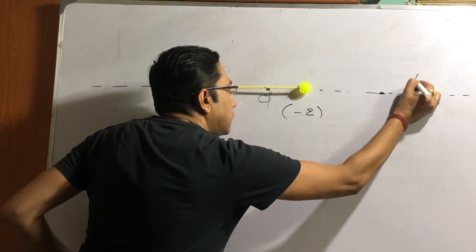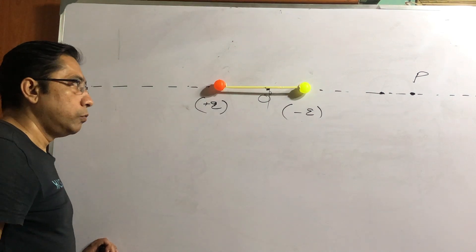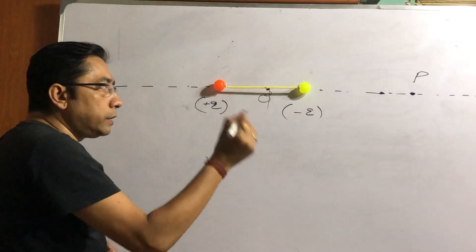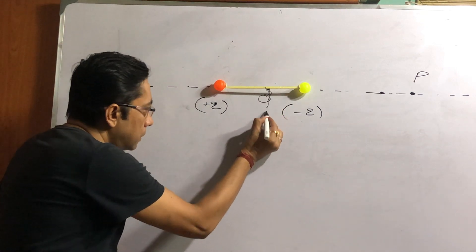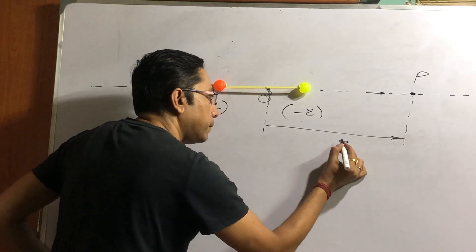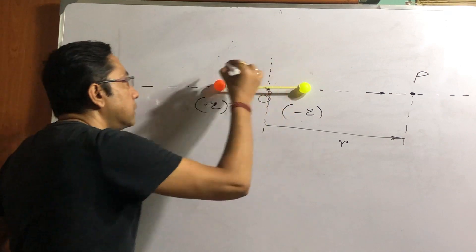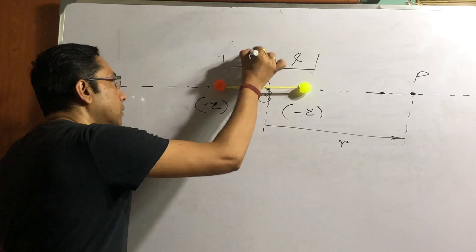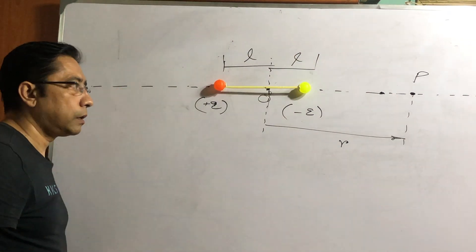Let us consider a point P here. At point P we are going to find electric field due to the dipole two charges. Now let us go for the orientations. Orientation means point P lies at a distance R from center, and the dipole itself has a length 2L. 2L means from center to this charge L, that charge L.